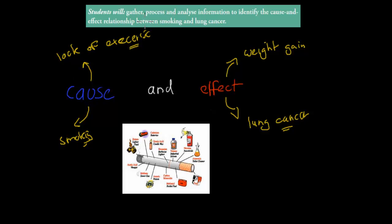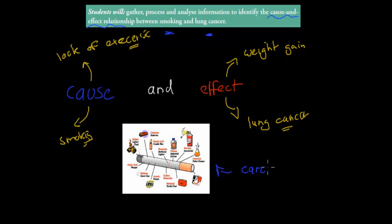The thought point itself says: students will gather, process, and analyze information from secondary sources to identify the cause and effect relationship between smoking and lung cancer. I'm going to go over what actually, inside cigarettes, causes the lung cancer — something we call carcinogens. Carcinogens are any substance or radiation that causes cancer.